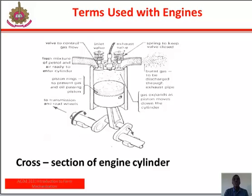We also have bore — bore represents the internal diameter of the cylinder. Stroke is the distance between the bottom dead center and the top dead center. Swept volume is the volume of the space between the top dead center and the bottom dead center, also called piston displacement. Engine capacity is the swept volume of all the cylinders, and engine size is given by the bore and the stroke of the engine.